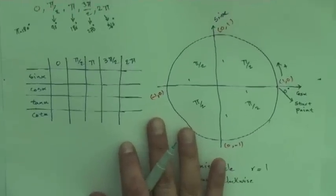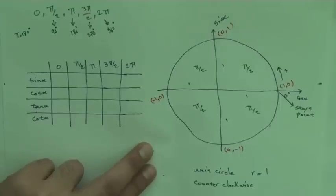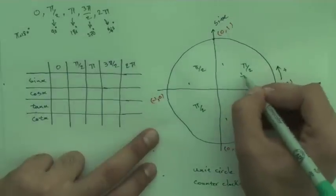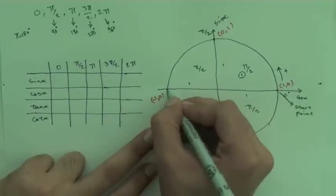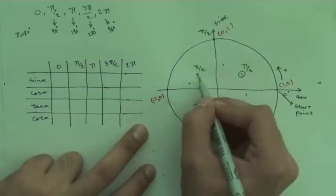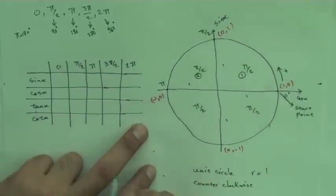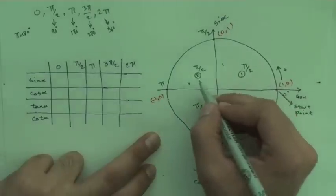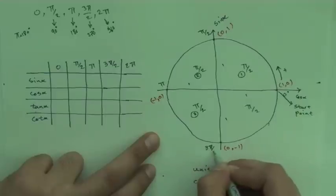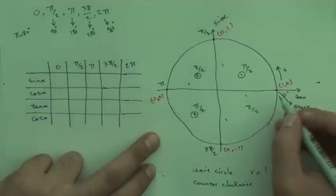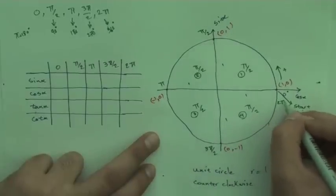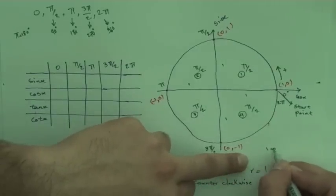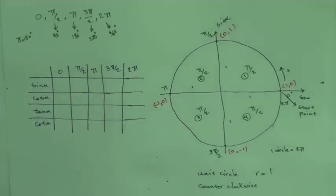Starting at 0, when you reach the top point you've passed one π/2, so that point is π/2. Going to the left point, you pass 2×(π/2) = 2π/2 = π, so the half circle is π. The bottom point is 3π/2, and returning to the start completes 4×(π/2) = 2π. So one full circle is 2π.